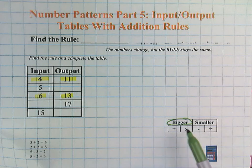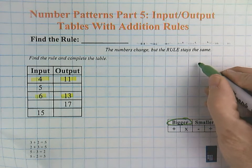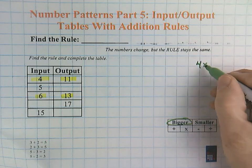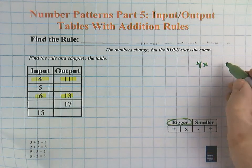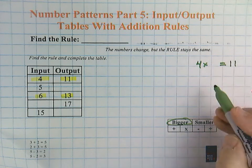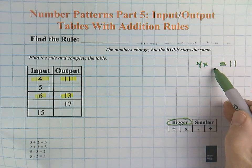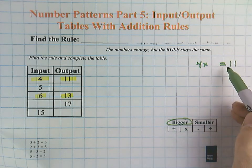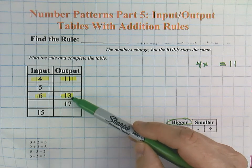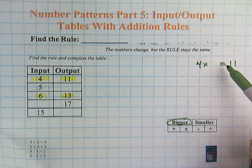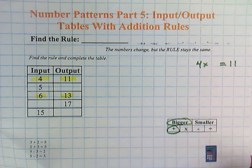I'm going to rule out multiplication. When I take my 4, I cannot multiply 4 by any number and get 11. For example, 4 times 3 would be 12, and 4 times 2 would be 8. So if the rule doesn't work for the top row, it means it's not going to work at all, which means it's not going to be multiplication. So we are working with an addition rule.